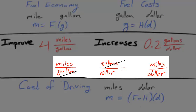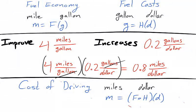Working backwards with the units we have, if we multiply fuel economy change and fuel cost change, we obtain the units for the change in cost of driving. So with an improvement of 4 miles per gallon and an increase of 0.2 gallons per dollar, we'd expect an increase of 0.8 miles per dollar in our cost of driving.